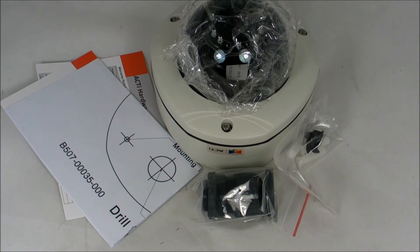Here's just a quick recap of what's in the box. You have the camera, mounting screws, cable gland, mounting template, hardware warranty card and a quick installation guide.